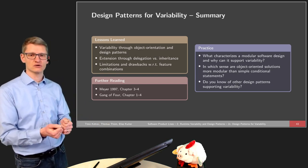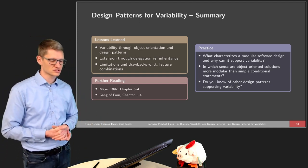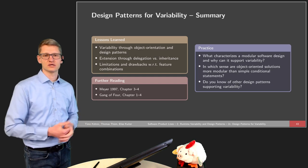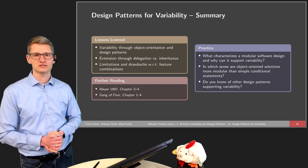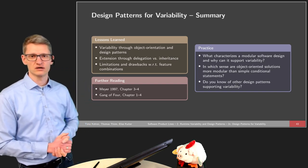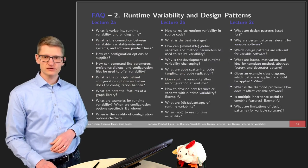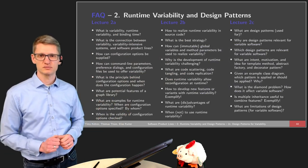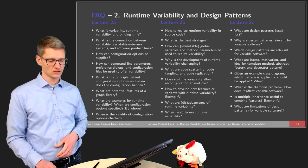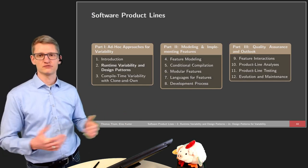In which sense are object-oriented solutions more modular than simple conditional statements? And in which way does it enhance runtime variability if we are actually using object-oriented design patterns? Also consider: do you know any other design patterns that support variability? You could have a look at the Gang of Four book and see what other design patterns are out there and which support variability. There are also a couple of questions provided — do not get overwhelmed by the slide, but it might prove helpful if you want to do some post-processing and verify that you actually understood all the necessary parts. In the next lecture, we will talk about compile-time variability as the other part of binding time, which is more relevant to product lines, and we will look at a particular technique known as cloning.